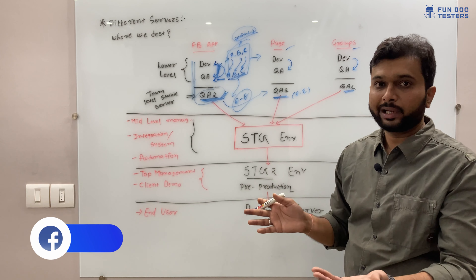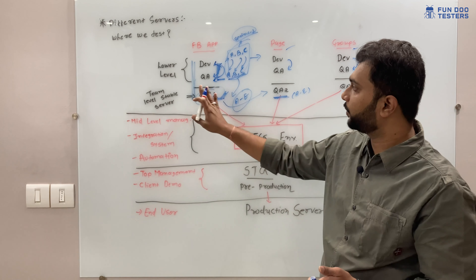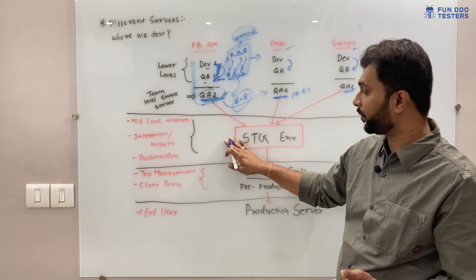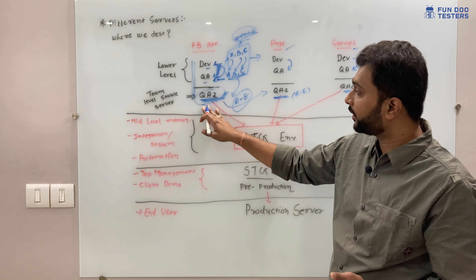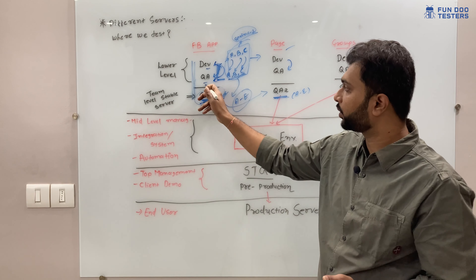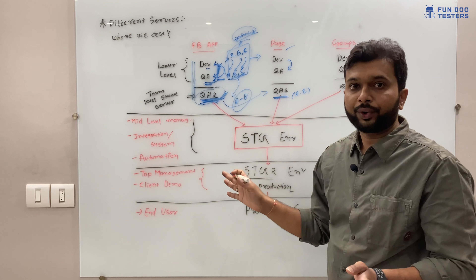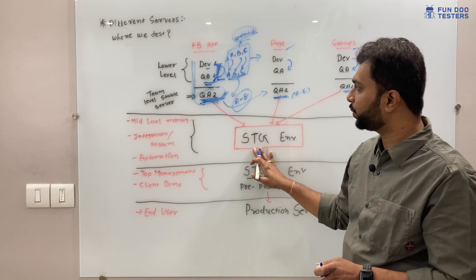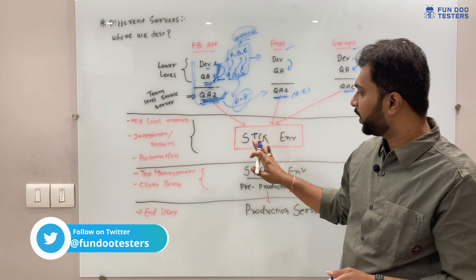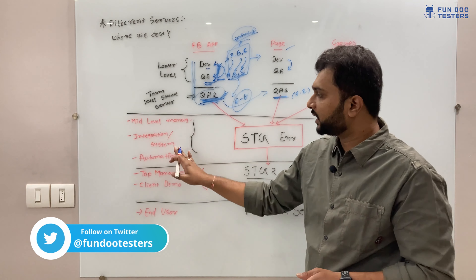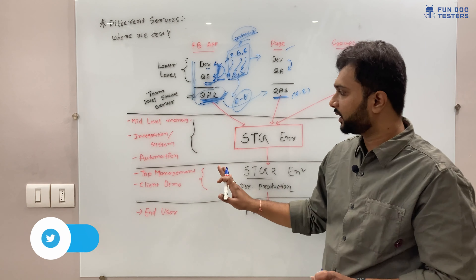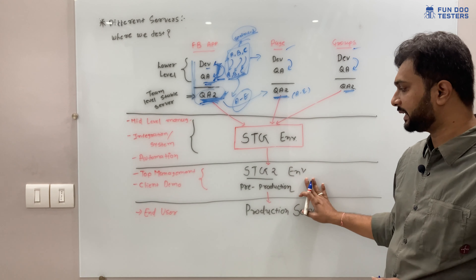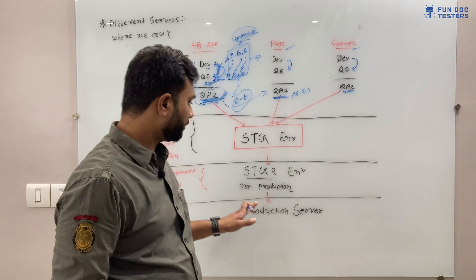At the stage level, testers focus on business scenarios and critical functionality - particularly integration between the Facebook app and page, or Facebook app and groups. Lower-level functional testing, like how many characters can be entered in a login field, is not repeated here since it was already tested in dev, QA, and QA2 environments. After testing in the stage environment, ideally there should be no defects since no code changes are made.